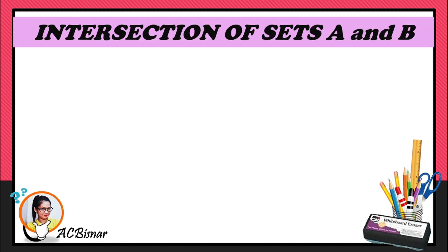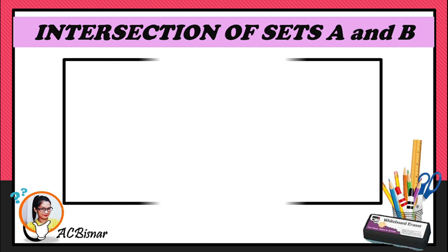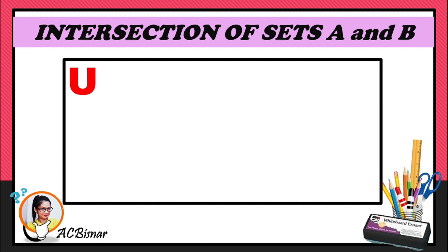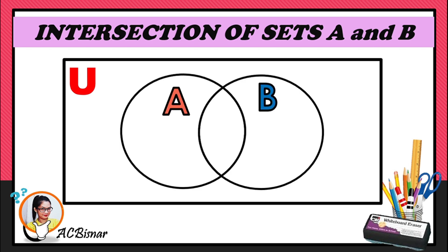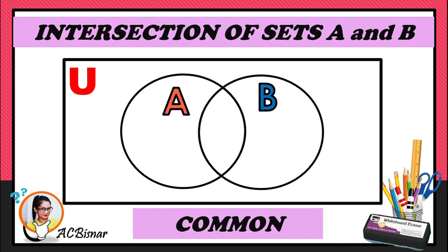Next is the intersection of sets A and B. Again, you're going to use the rectangle to represent the universal set and draw two circles to represent set A and set B. To get the intersection, the word you need to remember is 'common' — those are the elements similar in both A and B.